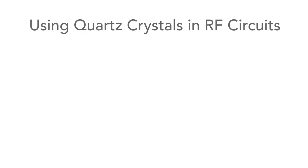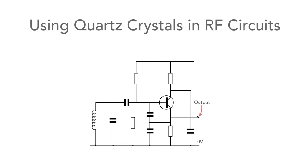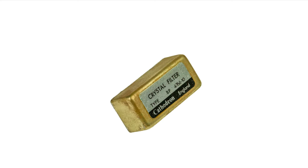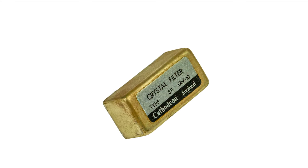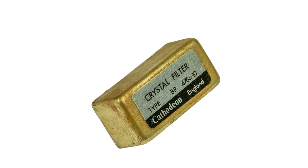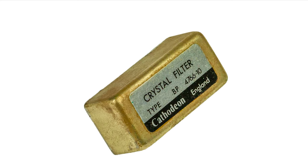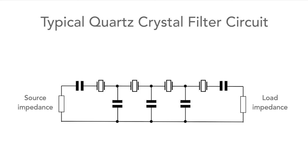Quartz crystals are very easy to use within electronic circuits. For an oscillator it's possible to use them by simply replacing what might be a normal LC circuit with the crystal itself, and here's an example of a circuit that is very widely used. Quartz crystals can also be used in filter circuits — this module is actually a complete crystal filter consisting of several crystals. Normally several crystals are used to give the required steep sides to the filter whilst also providing the required bandwidth for the signals to be received.